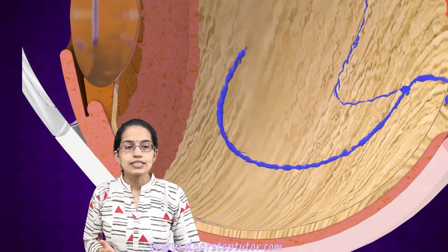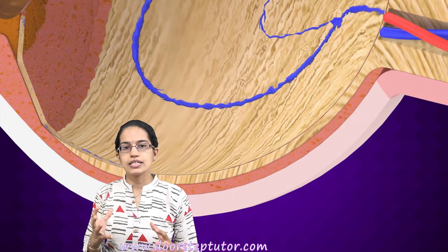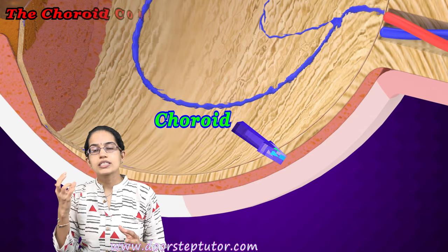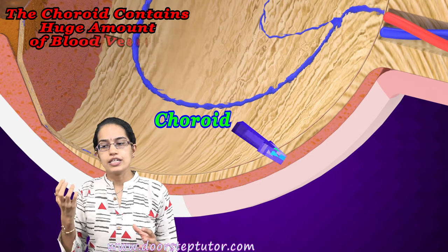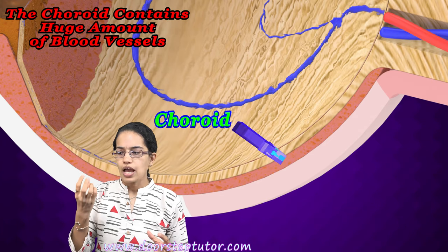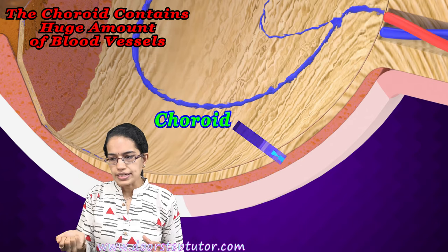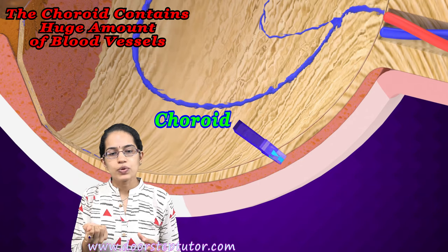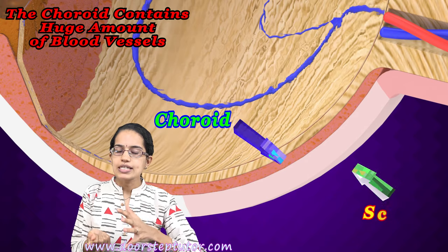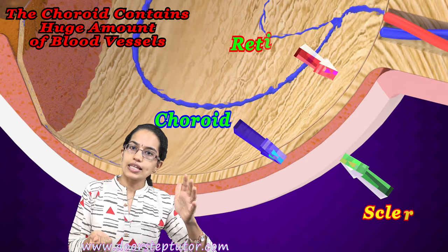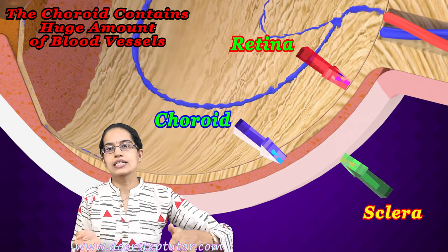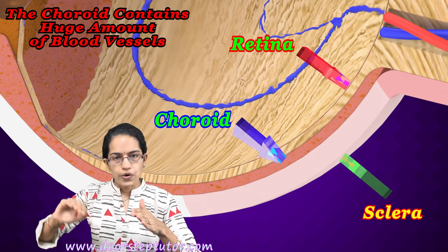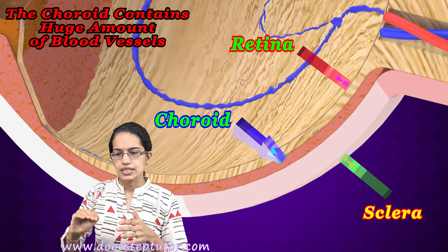The next important thing is the choroid. The choroid layers have a huge amount of blood cells present in them, and they lie between the sclera and the retina — so between the sclera and the retina, you have the choroid.